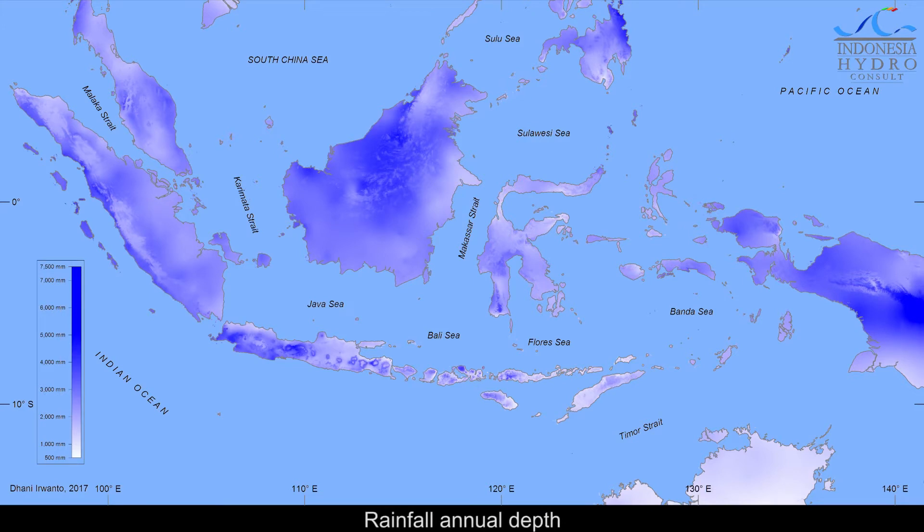The rainfall map shown here is used to estimate the potentials of flow rate of water, along with actual evaporation, drainage basin area, and vegetation maps. The deeper the rainfall, the higher the flow rate.